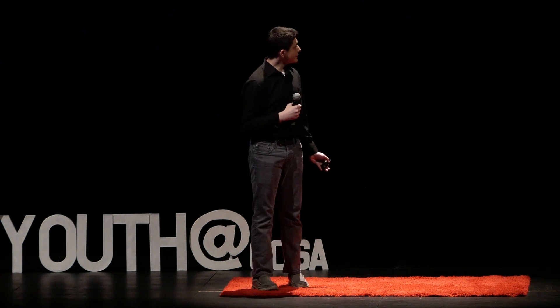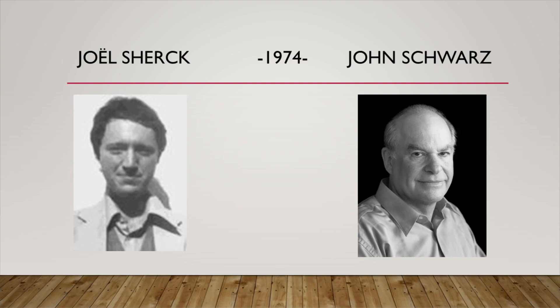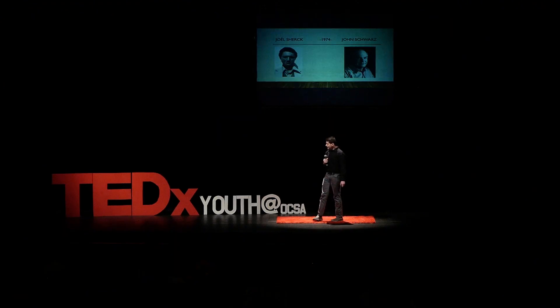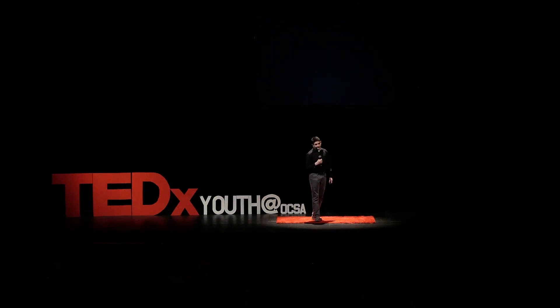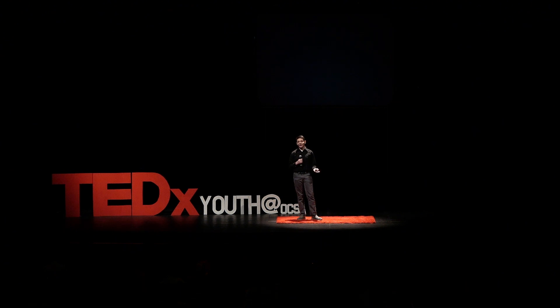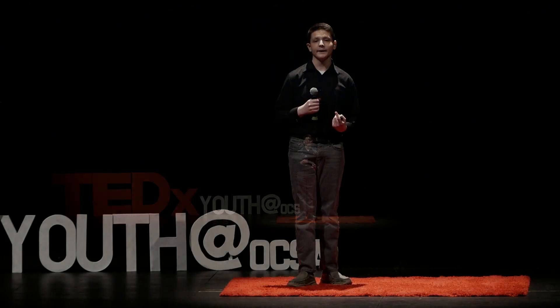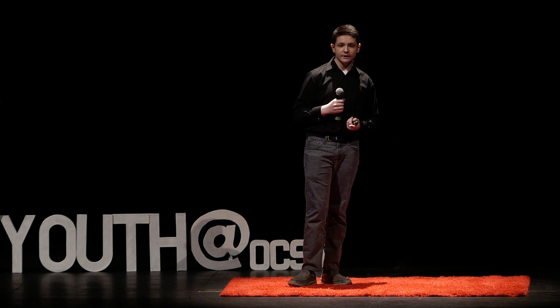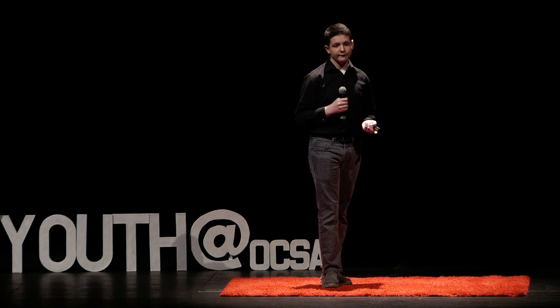This model was called string theory. String theory was first proposed in 1974 by two scientists named Joel Shirk and John Schwartz. They theorized that all particles in space exist not as little one-dimensional points, but rather as a length of string with no thickness.